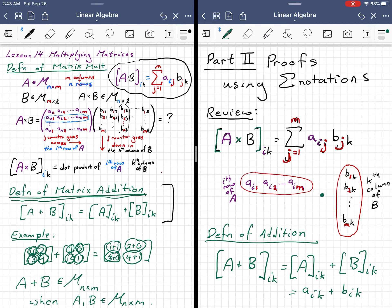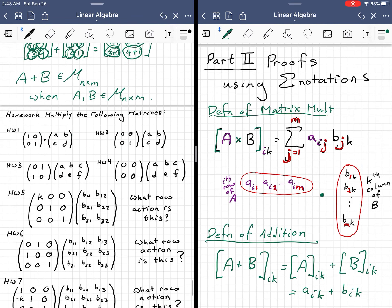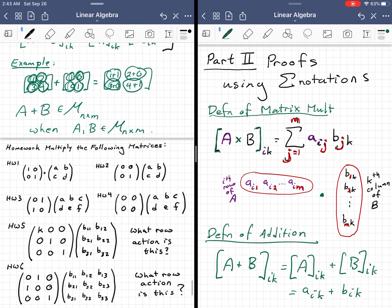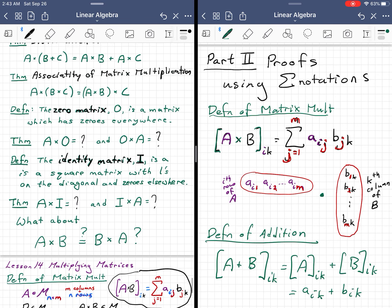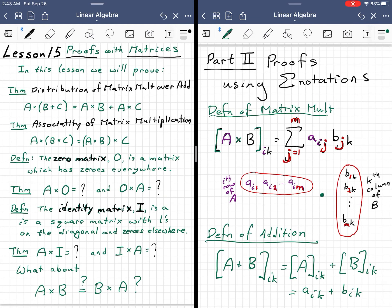And up here, we have the review of the definition of multiplication with sums. Okay, and we're going to use these two definitions in order to do our theorems now. So let's put the theorems back here. Alright, so we're going to use these definitions for these theorems. So this is for part two.